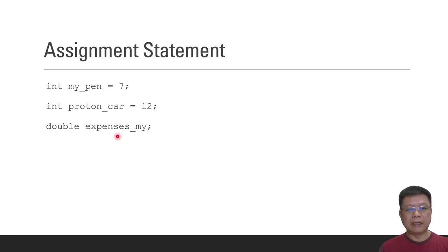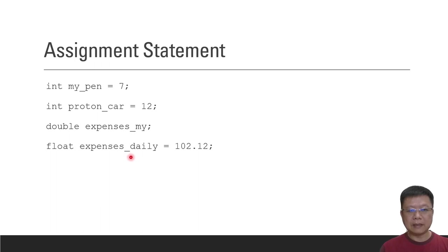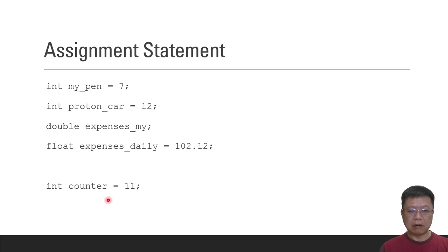In this case we didn't assign any value to expenses_mine. 102.12 is assigned to expenses_daily, and the data type is float. And the integer value 11 is assigned to counter.